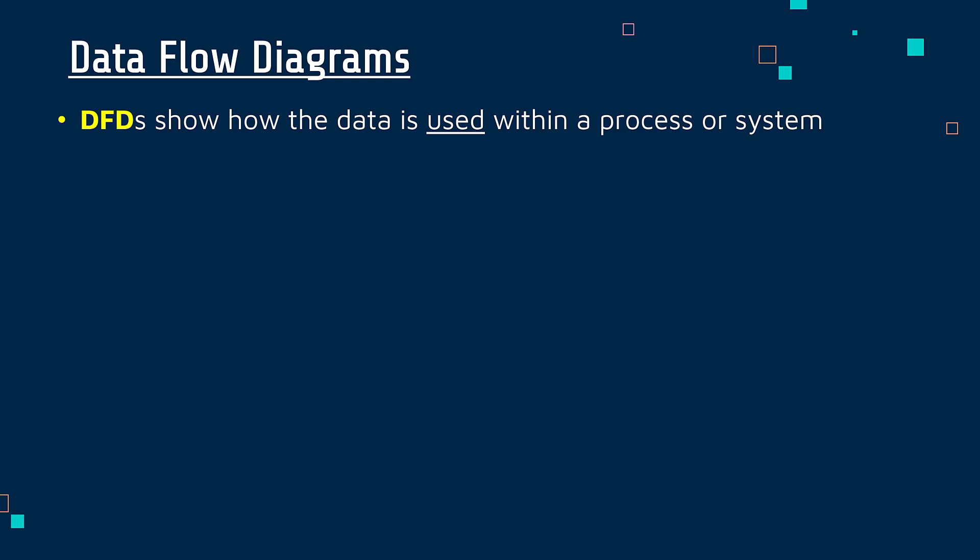A data flow diagram, often shortened to just a DFD, is there to show you how the data is used within a process or system, and really showing how the data moves about within that process or system. So the word flow suggests things are moving around.